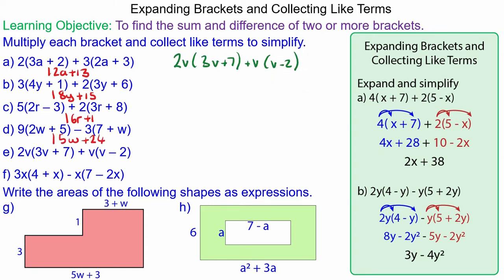For question e, we have 2v times 3v which is 6v squared, 2v times 7 which is 14v, v times v which is v squared, and v times negative 2 which is negative 2v. Collecting the like terms, we have 6v squared add v squared which is 7v squared, and 14v take away 2v is 12v.